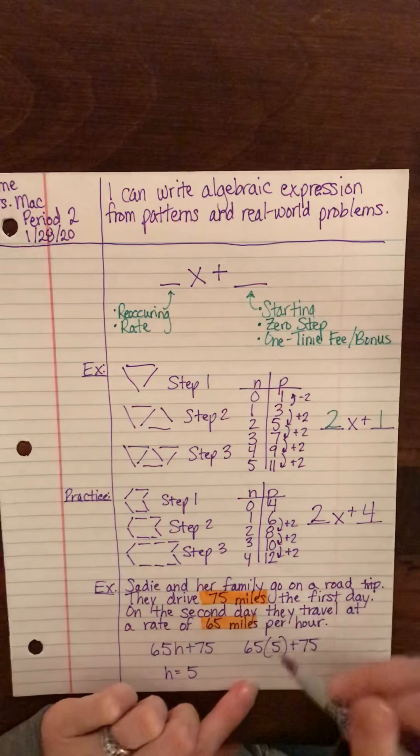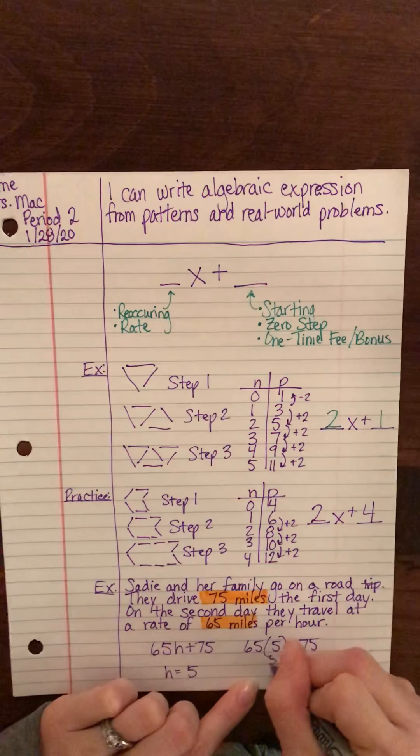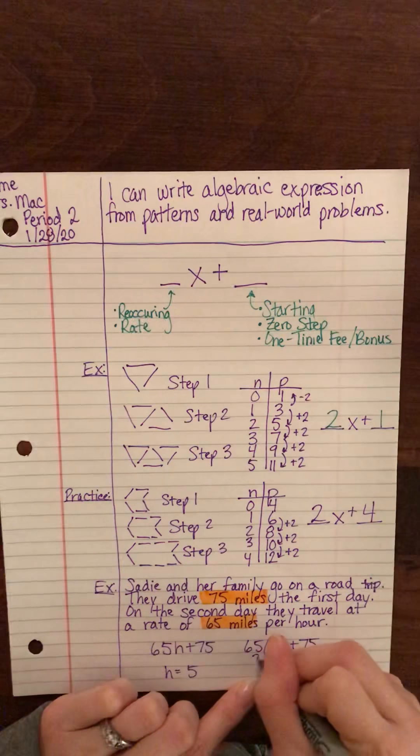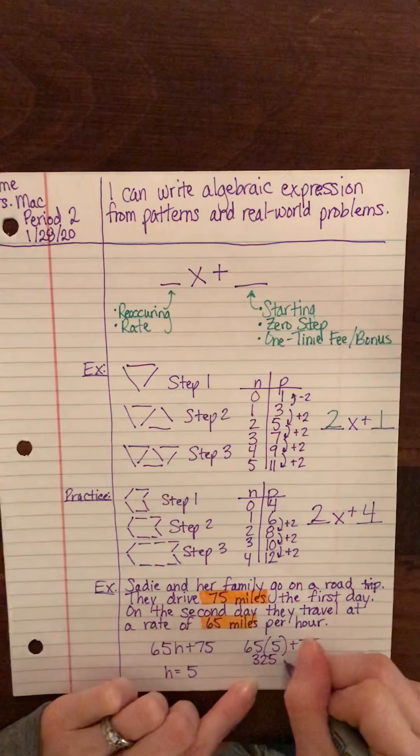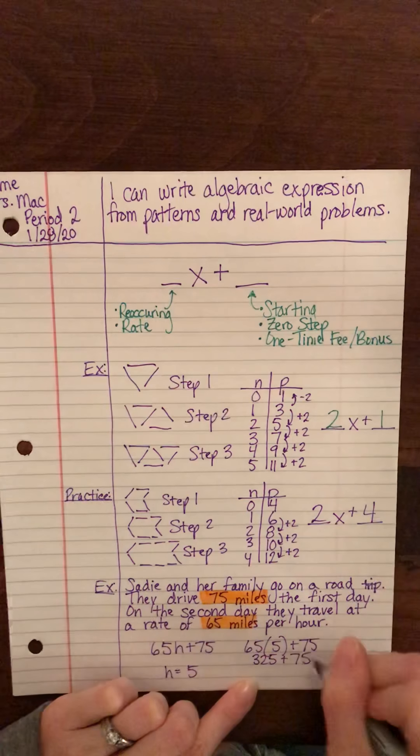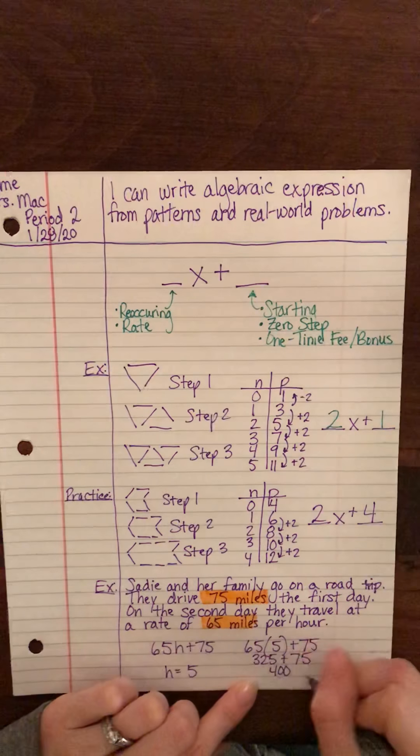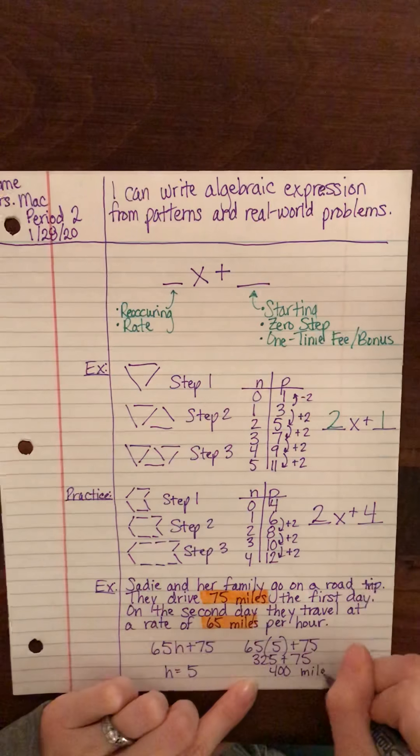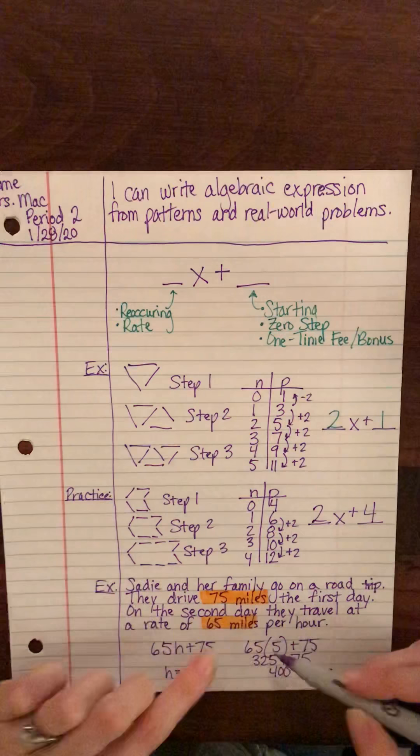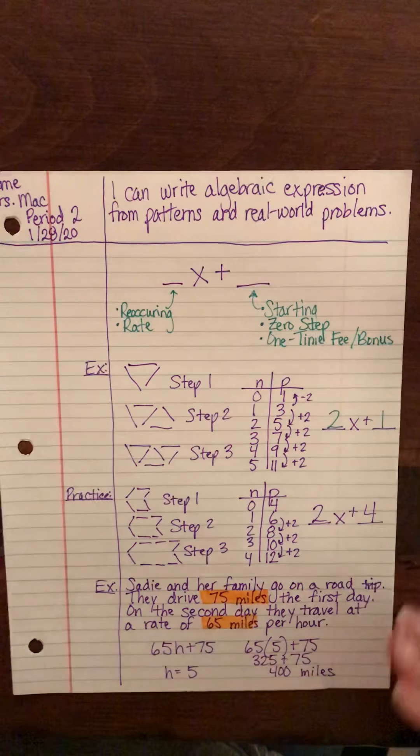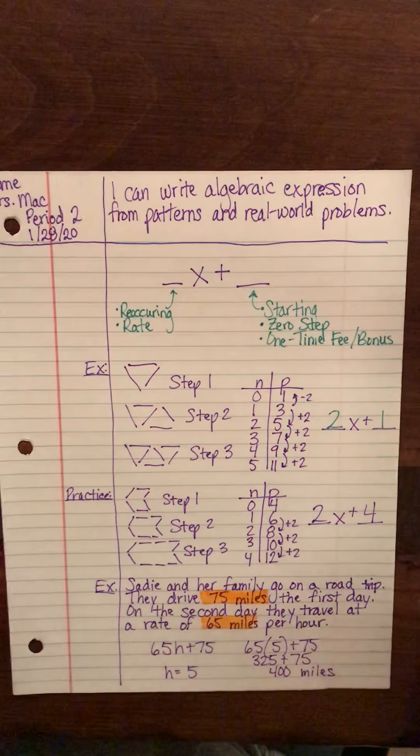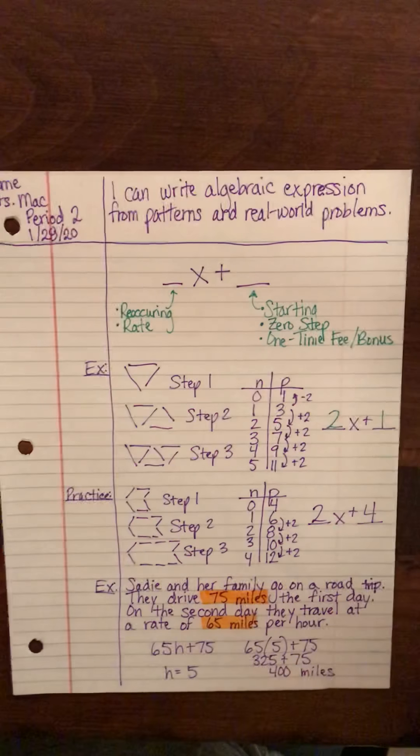Okay, 65 times five, I don't have a calculator here, I think it's 325. And then we're going to go ahead and add this, so that means 400 miles. So if they drive for five hours that day, they will have traveled 400 miles total on their trip.